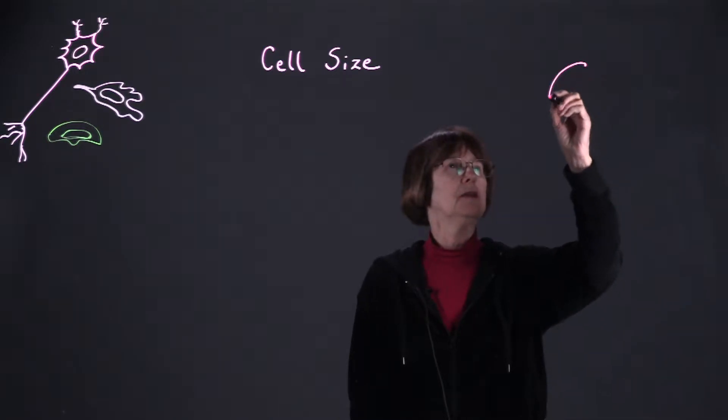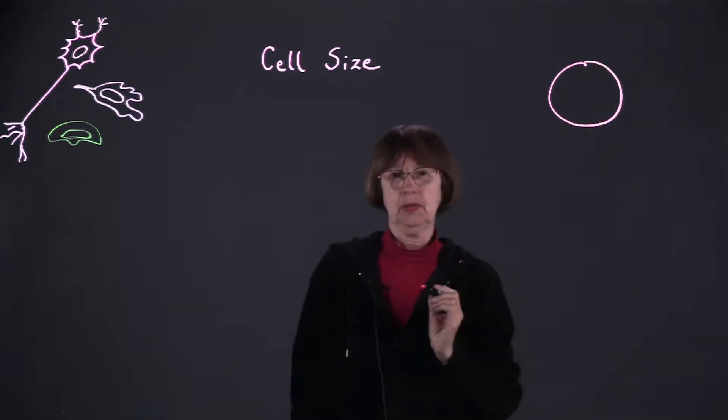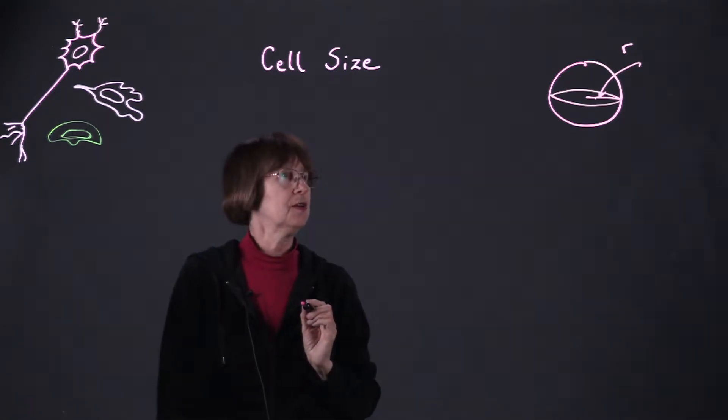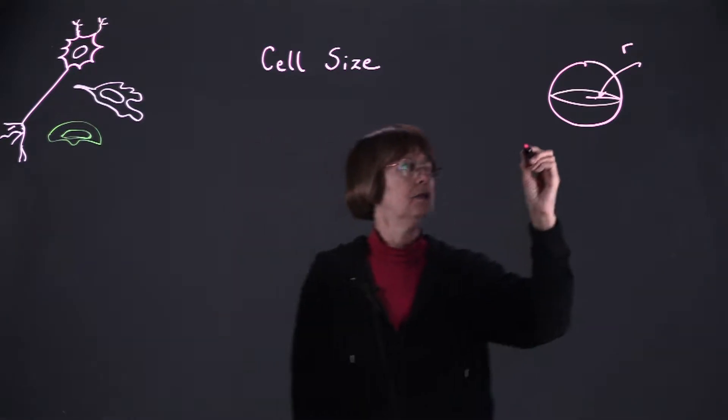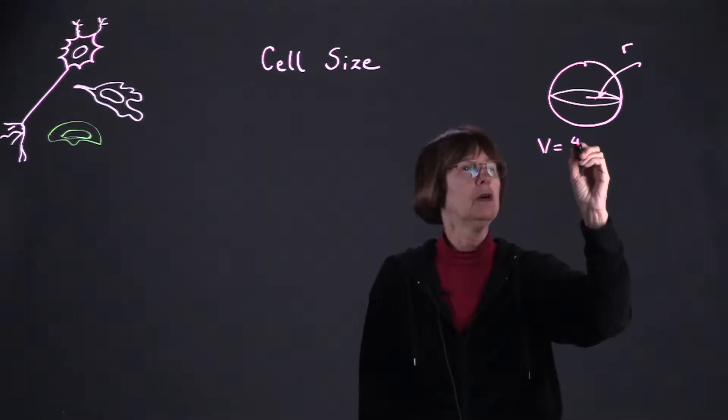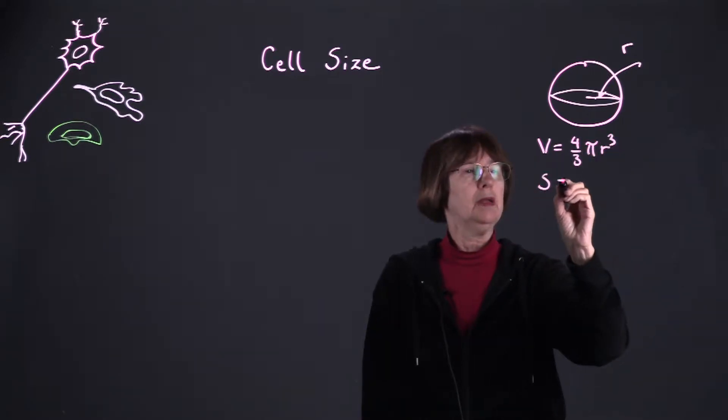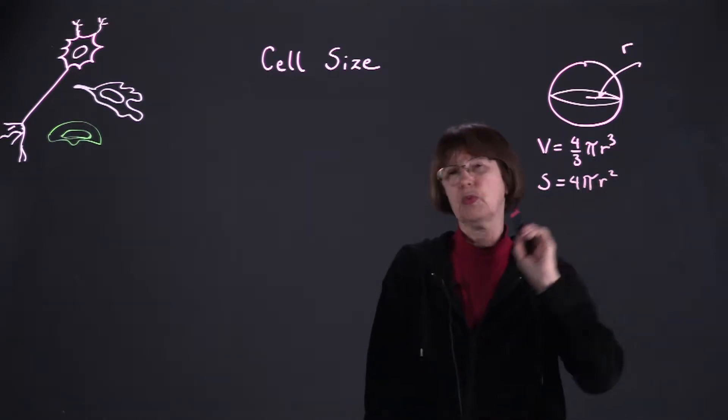So we'll assume that the cell of interest will be spherical. Here we've indicated the radius of such a cell, and let's recall that the volume and surface area of a spherical cell are 4/3πr³ and 4πr².